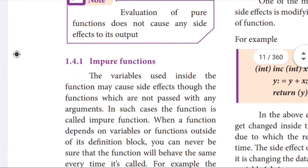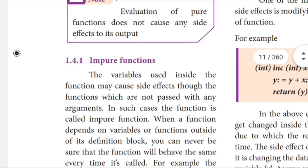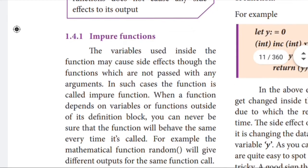Let us see the impure function. Impure function is nothing but the variables used inside the function may cause side effects through the function, which are not passed with any arguments. In such cases the function is called an impure function. Impure function will definitely cause a side effect and there will be a destruction.